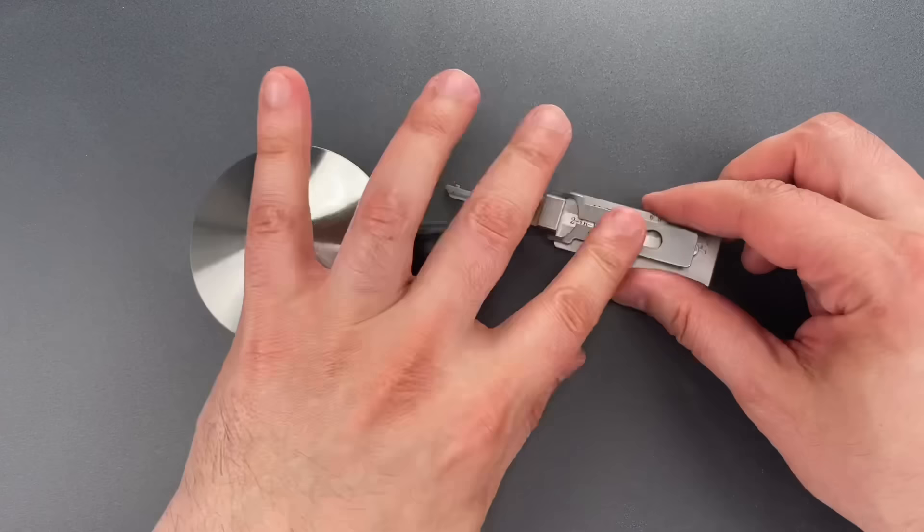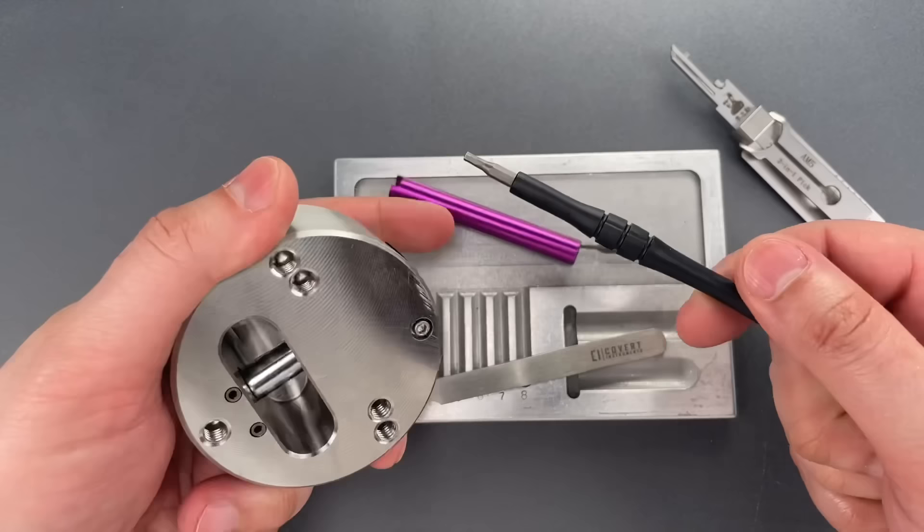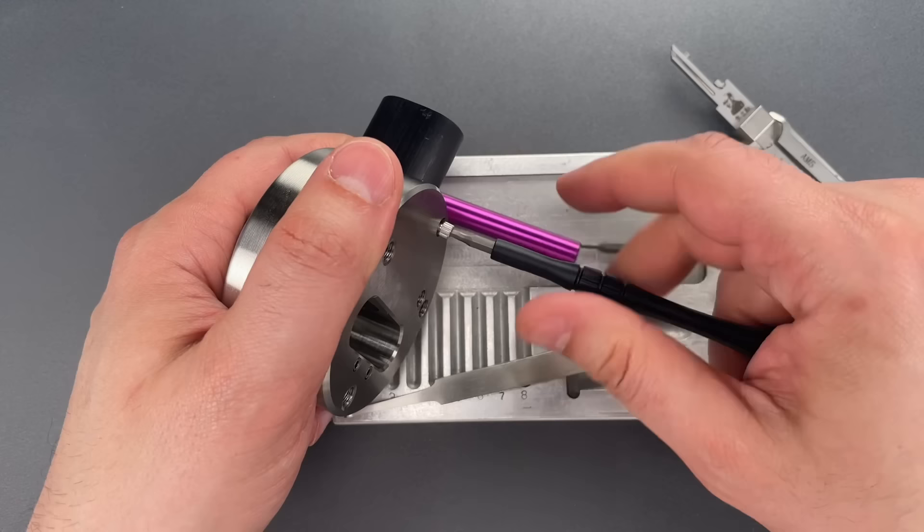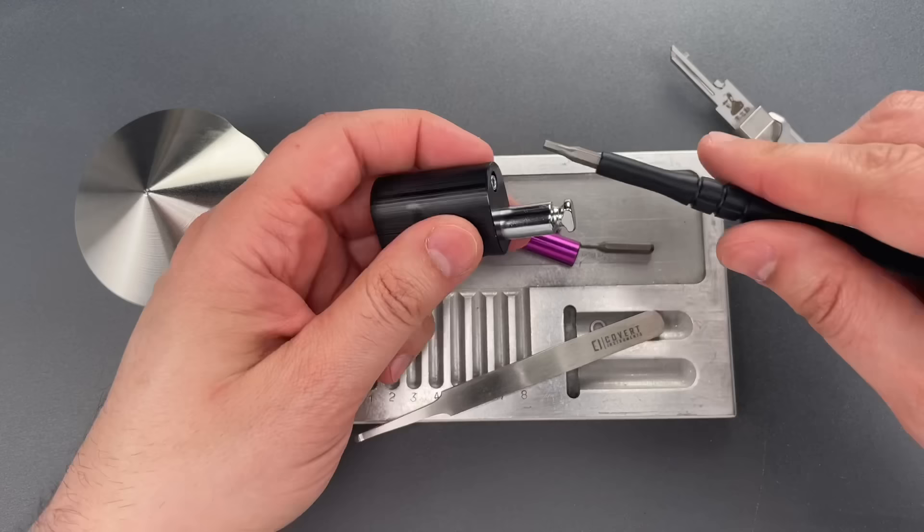To get this open now that it's unlocked, all we have to do is remove this screw on the back of the puck lock. Then to take the core out we have one more similar screw.